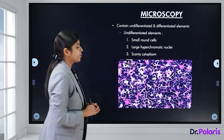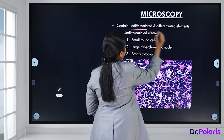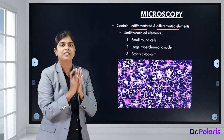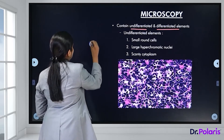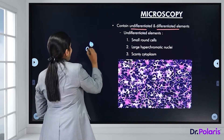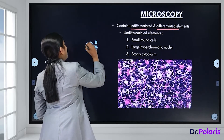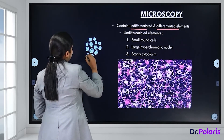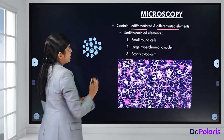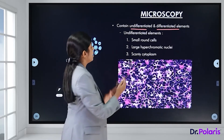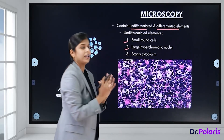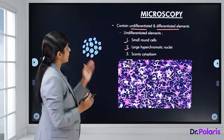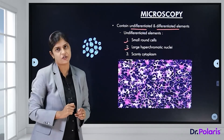Microscopically, retinoblastomas have undifferentiated and differentiated elements. The undifferentiated component consists of small round blue cells arranged in sheets — cells with large hyperchromatic nuclei and hardly any cytoplasm. This classifies retinoblastoma as a small round blue cell tumour.